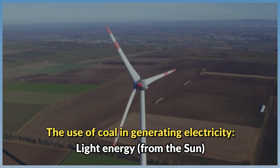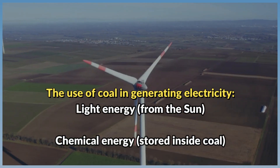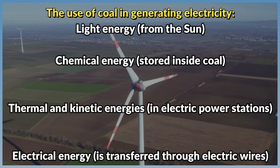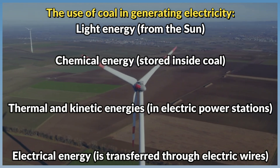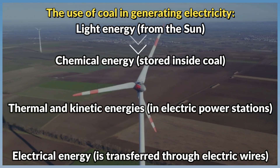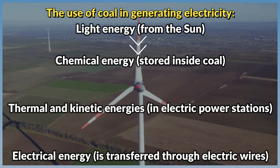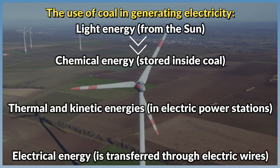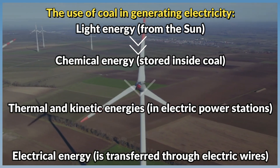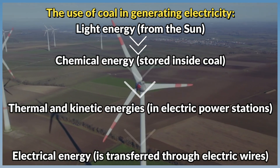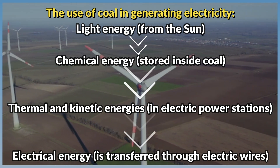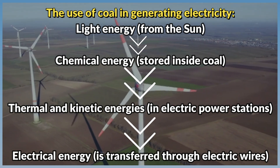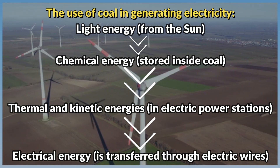The use of coal in generating electricity: light energy from the sun, chemical energy stored inside coal, thermal and kinetic energies in electric power stations, electrical energy is transferred through electric wires.